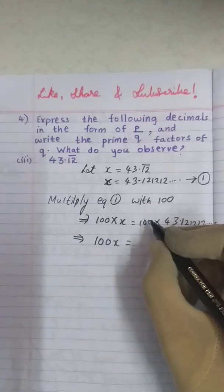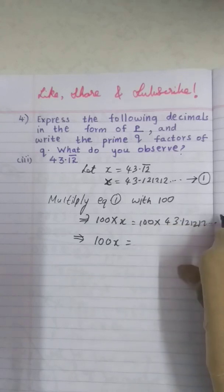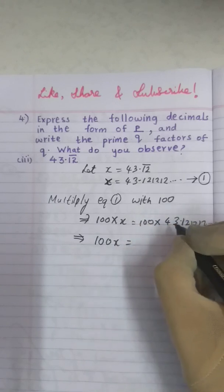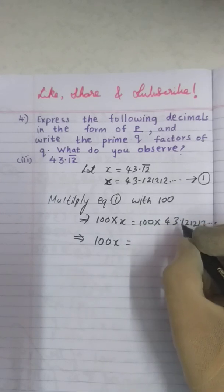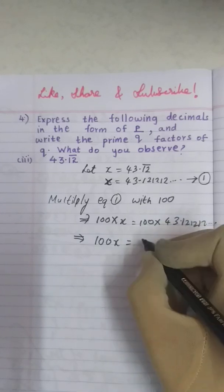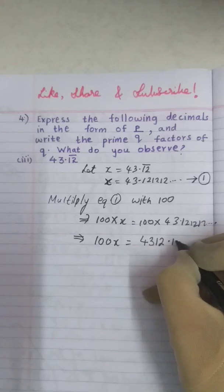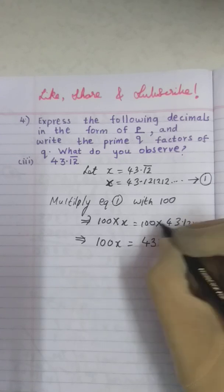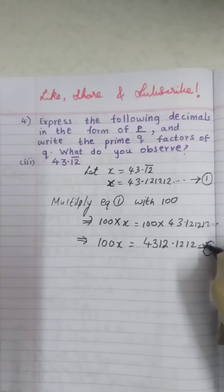Remember when in case of multiplication always shift the decimal point by right side. In case of division shift it by left side. So here two zeros are there, shifted by right side 1, 2. So what will become 4312.1212 and so on. We have shifted the decimal point by two places on right side since there were two zeros. Now this is my equation 2.